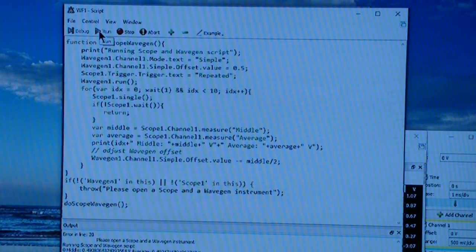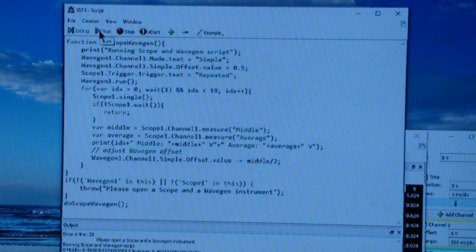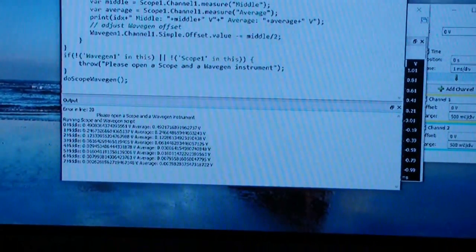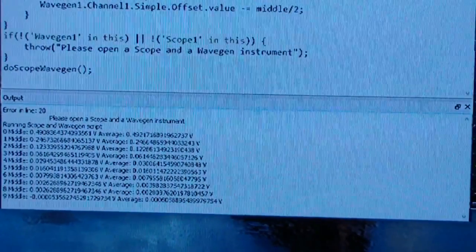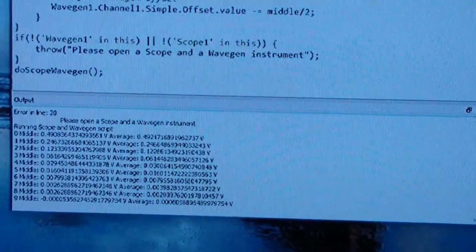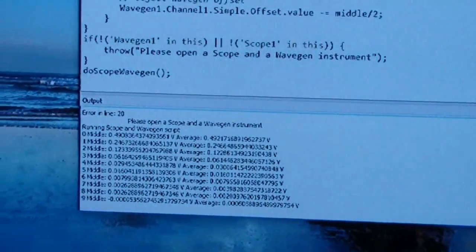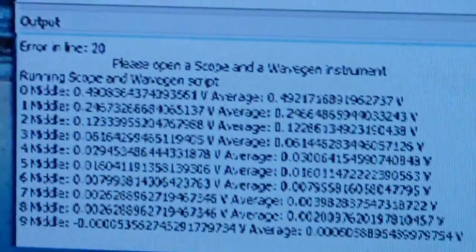Then go back to the script window and click Run. At the bottom it shows running the scope and wavegen. Let me zoom in on that a little bit so you can see it better.